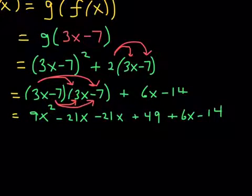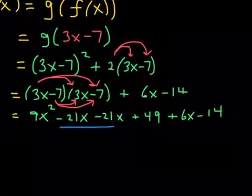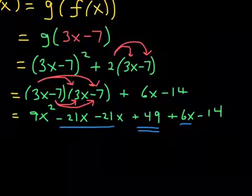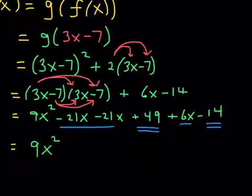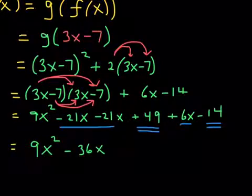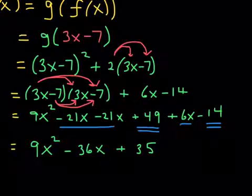So what we have here, let's see. We can combine these two like terms right there, and also with this one as well. So negative 21x, negative 21x, and then a positive 6x. At the same time, we can combine these constant terms, positive 49 and negative 14. When you combine all of these like terms, you get 9x squared. What is this? Negative 42 and then plus 6, so that will be minus 36x. And then 49 minus 14 would be positive 35.